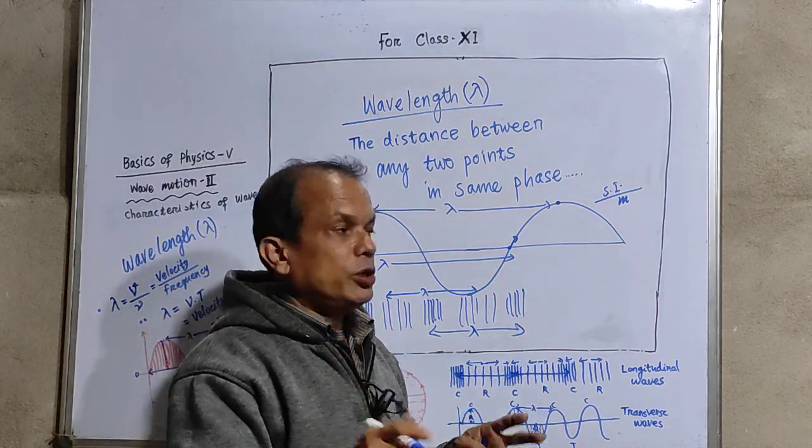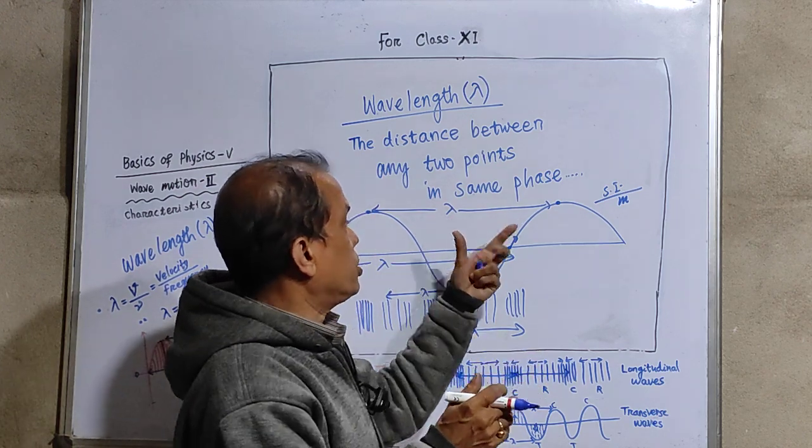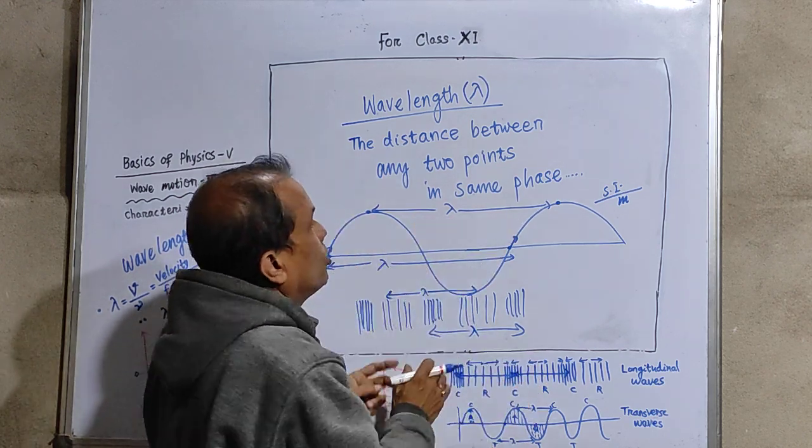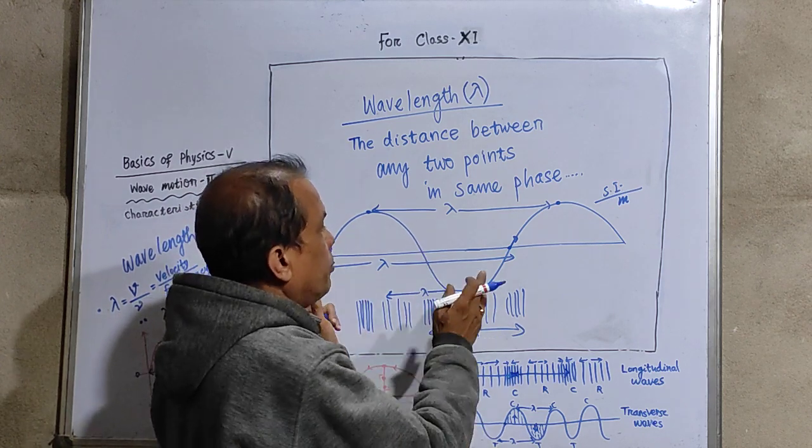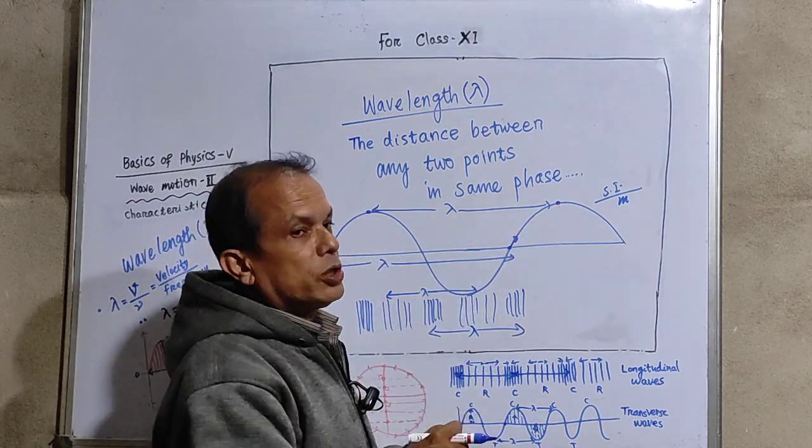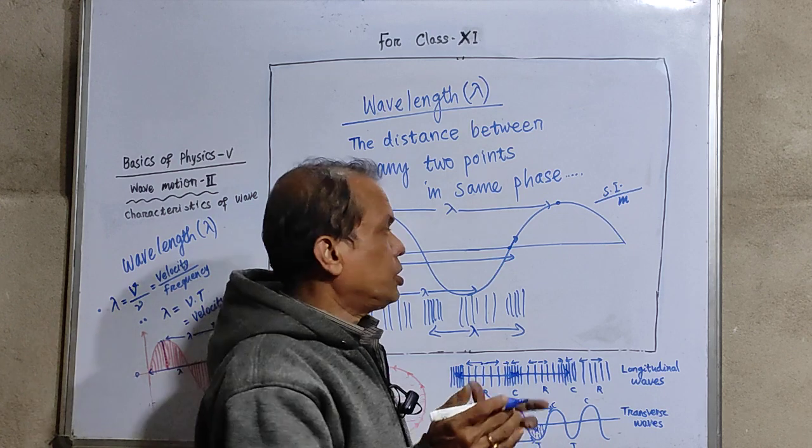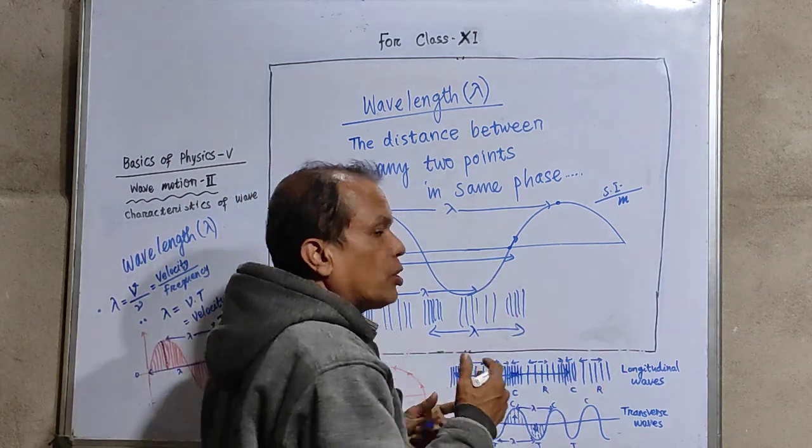It is the distance between two successive points which are in same phase. So in case of transverse wave motion or in longitudinal wave motion, we can measure this distance as two points in same phase or same condition. This is what we know as wavelength. And what are the formulae for them?